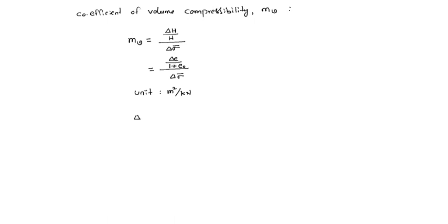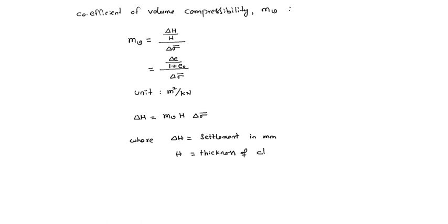From this we can find ΔH directly: ΔH = mv × H × Δσ̄, where ΔH equals settlement in mm, H equals thickness of clay stratum in millimeters, and Δσ̄ is the change in effective stress in kilo Newton per meter square.